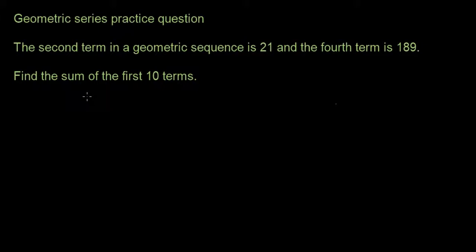Okay, so we have a geometric sequence, which means the formula for finding out each term in the geometric sequence is Tn equals A times R to the n minus 1. That's the formula for finding the nth term. We know that T2 is 21 and T4 is 189.